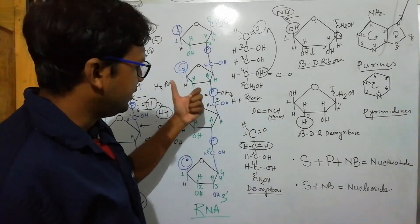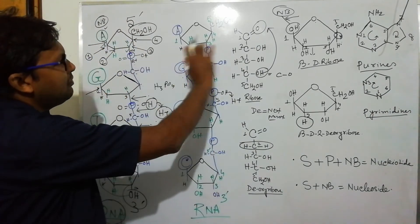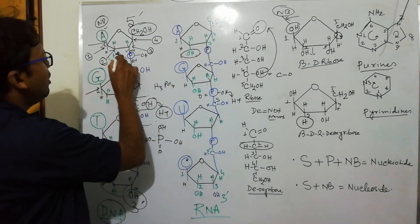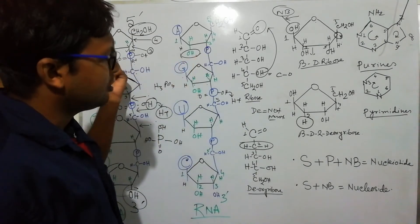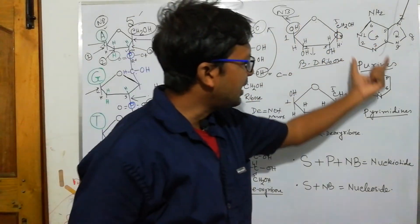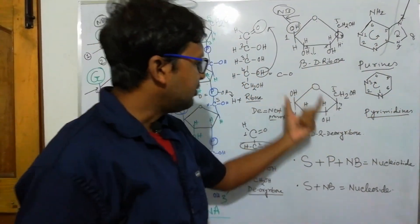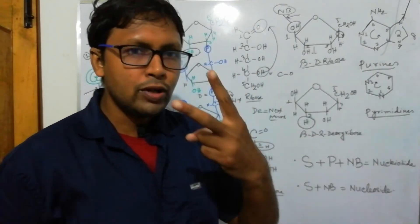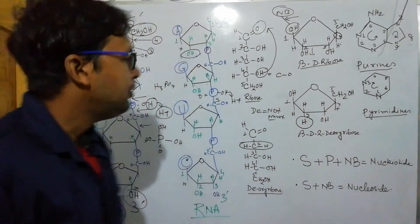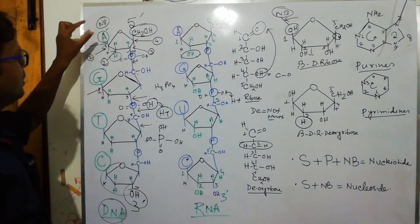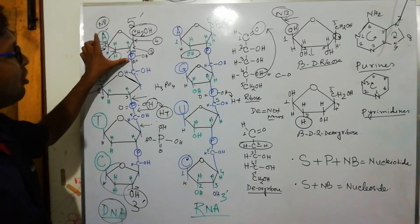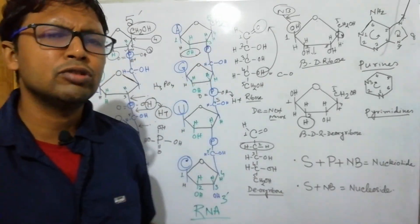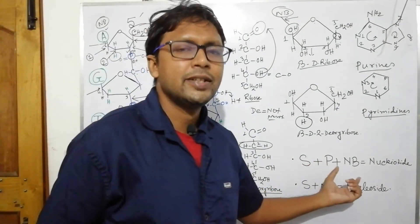The only structural difference between DNA and RNA is at the second carbon: in RNA (ribose sugar) the second carbon has an OH group, while in DNA (deoxyribose) it has only hydrogen. Nucleotides consist of three components: sugar, phosphate, and nitrogenous base. If phosphate is absent, the molecule is called a nucleoside. The basic difference between nucleotide and nucleoside is simply the presence or absence of the phosphate group.